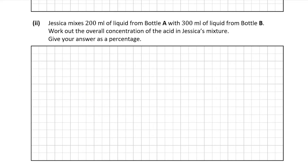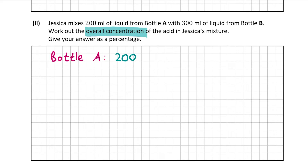Now let's have a look at part A2. We're told that Jessica mixes 200 millilitres of liquid from bottle A with 300 millilitres from bottle B, and we have to work out the overall concentration of the acid in the mixture. The first thing to do is work out how many millilitres of acid are in the liquid from each bottle. Bottle A has 200 millilitres at 12% concentration, so we multiply by 12%. We've already worked this out from part 1 — that's 24 millilitres.